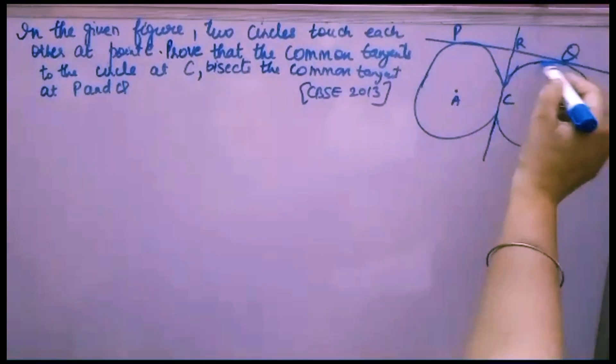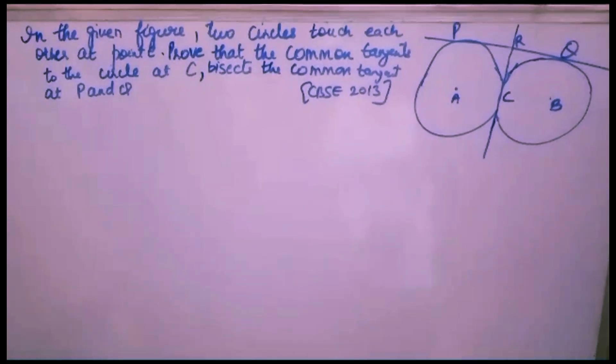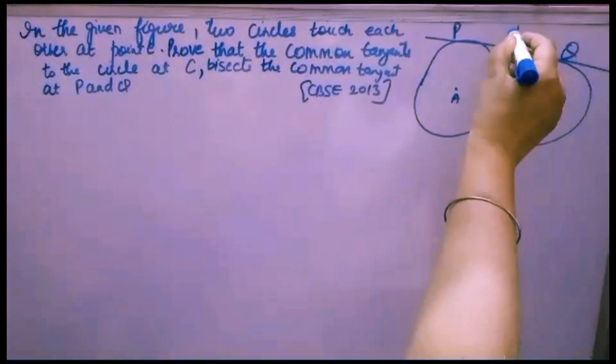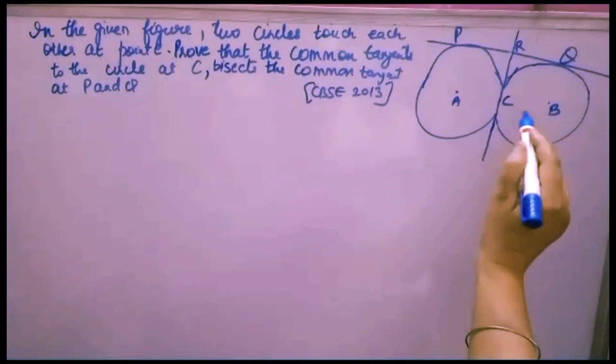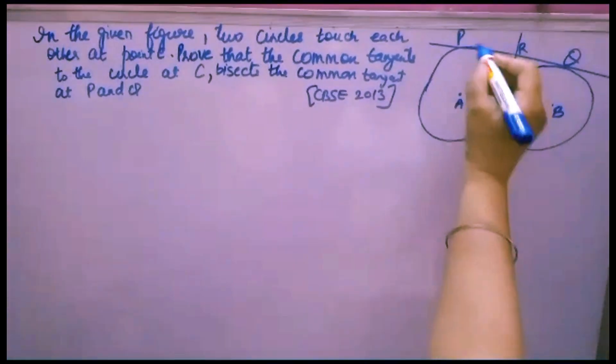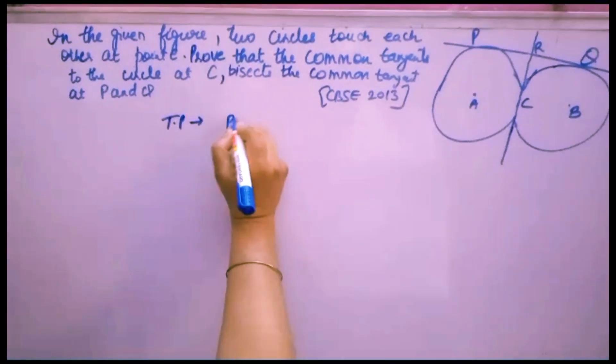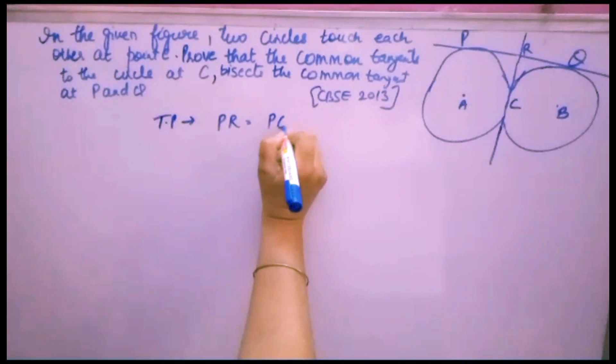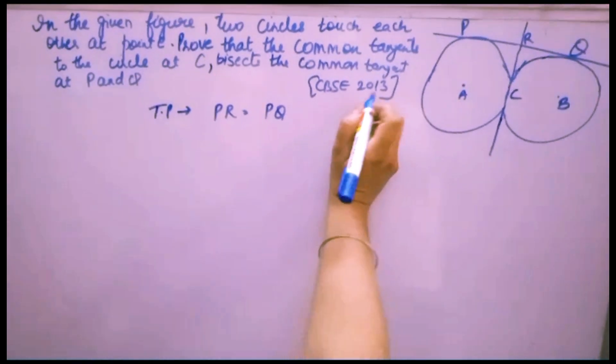These two circles touch each other at point C. Prove that the common tangent to the circle at C, this common tangent RC, is the common tangent to both the circles and bisects the common tangent at P and Q. This means you have to prove PR is equal to RQ. This question came in CBSE 2013.